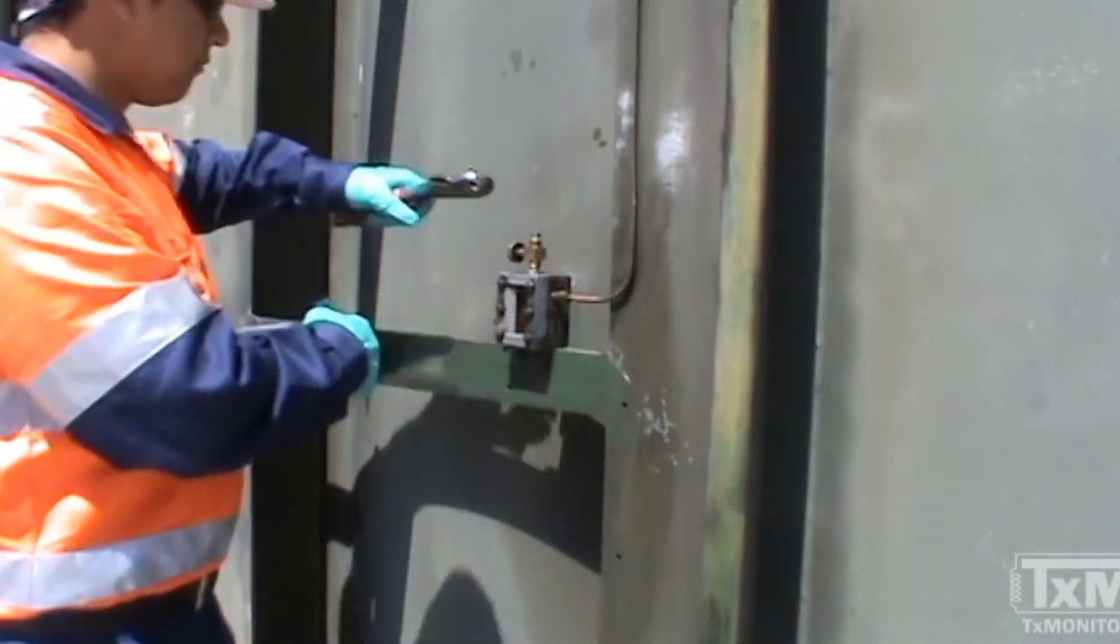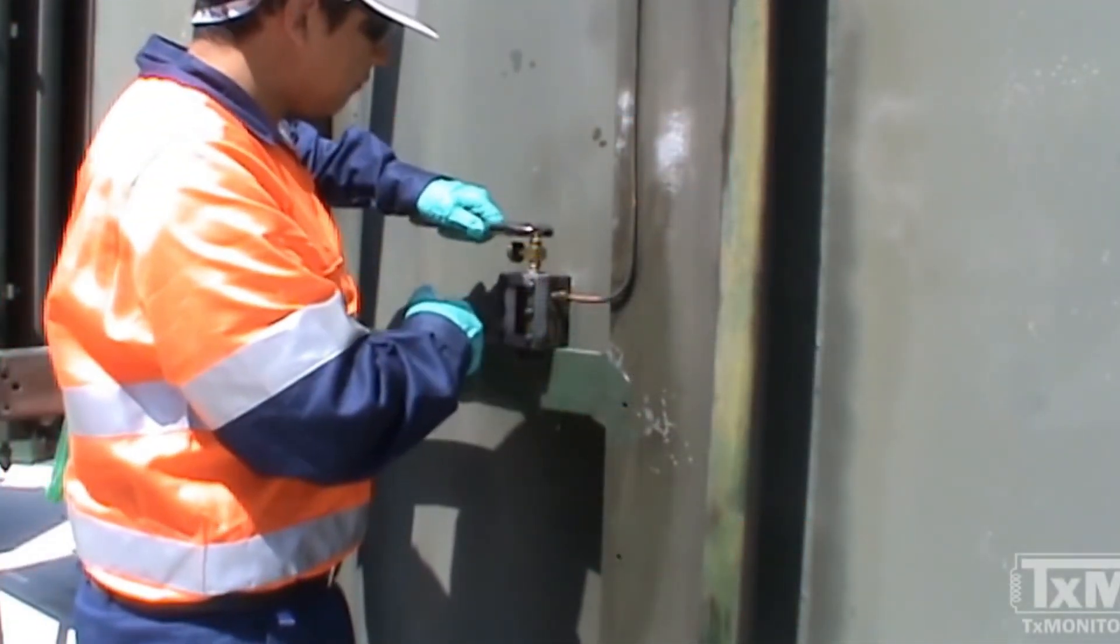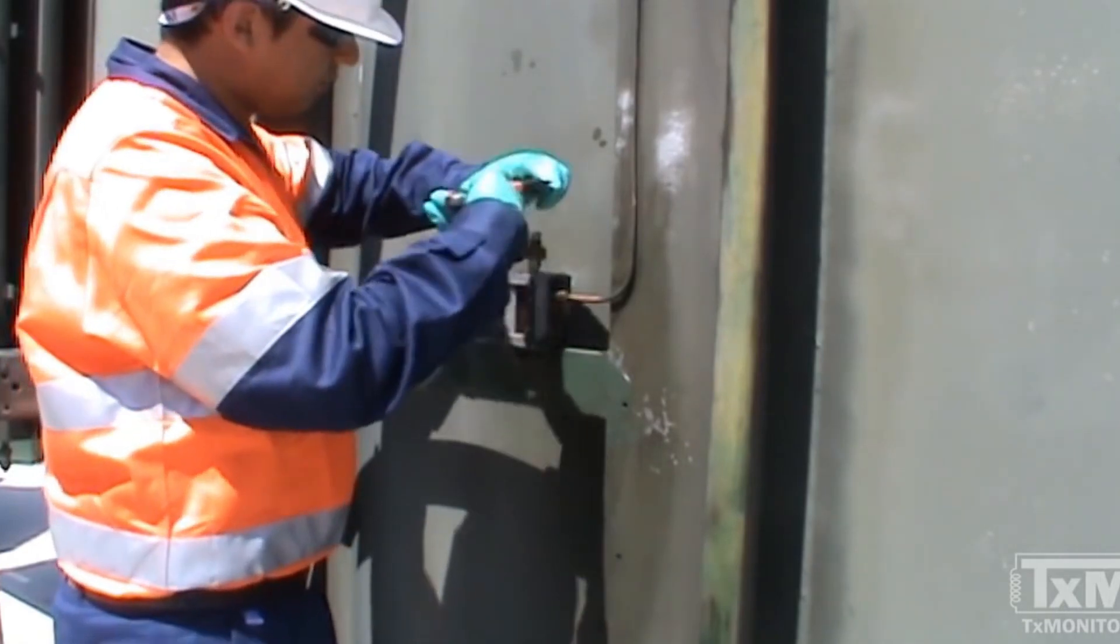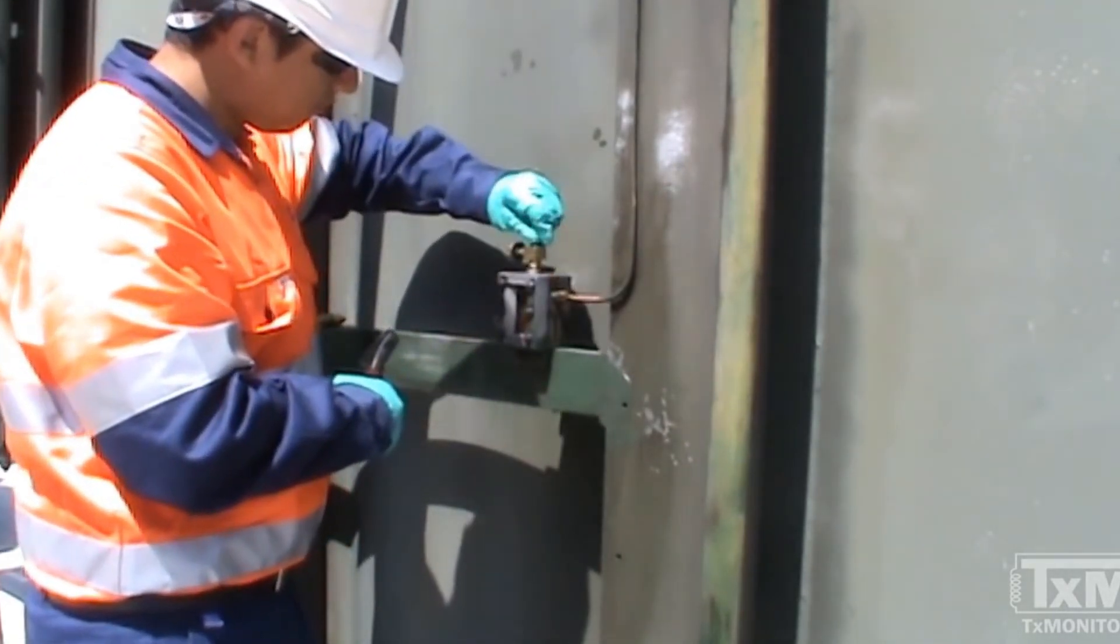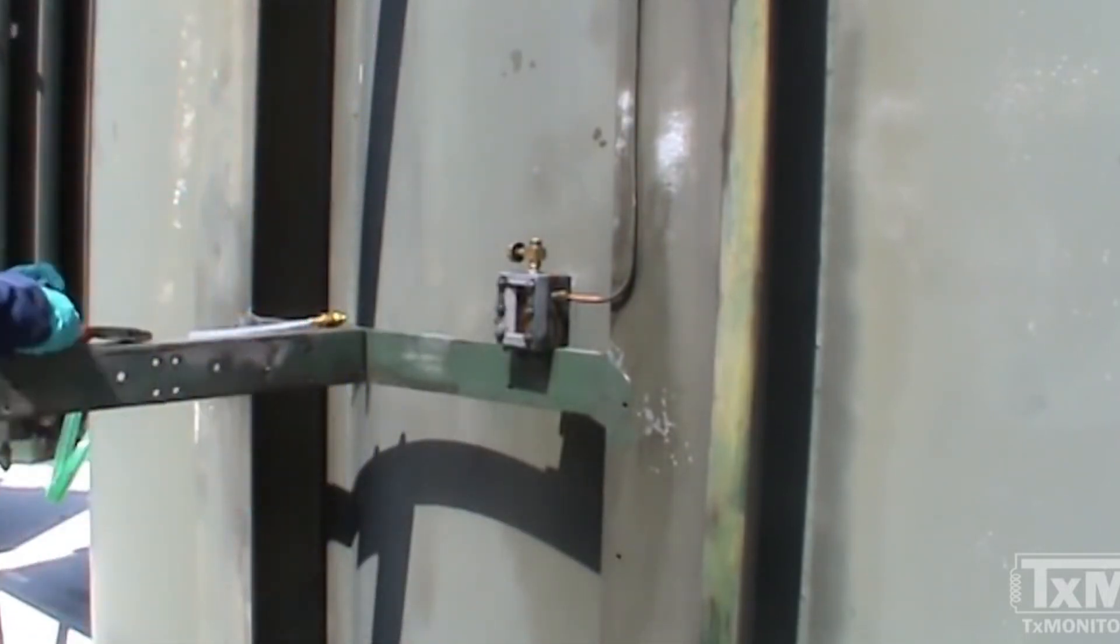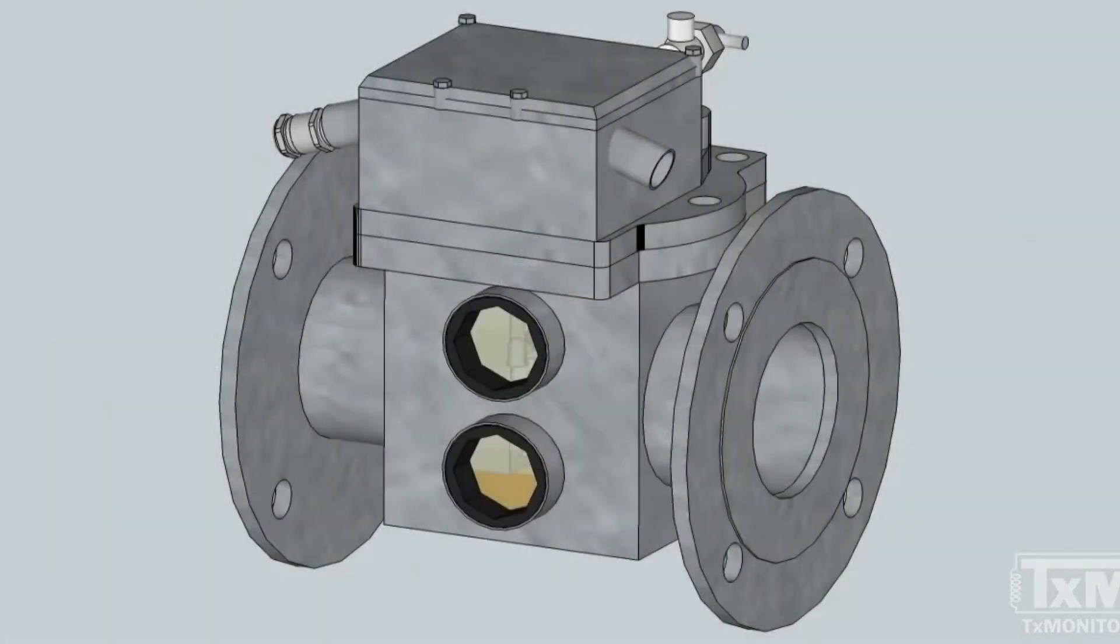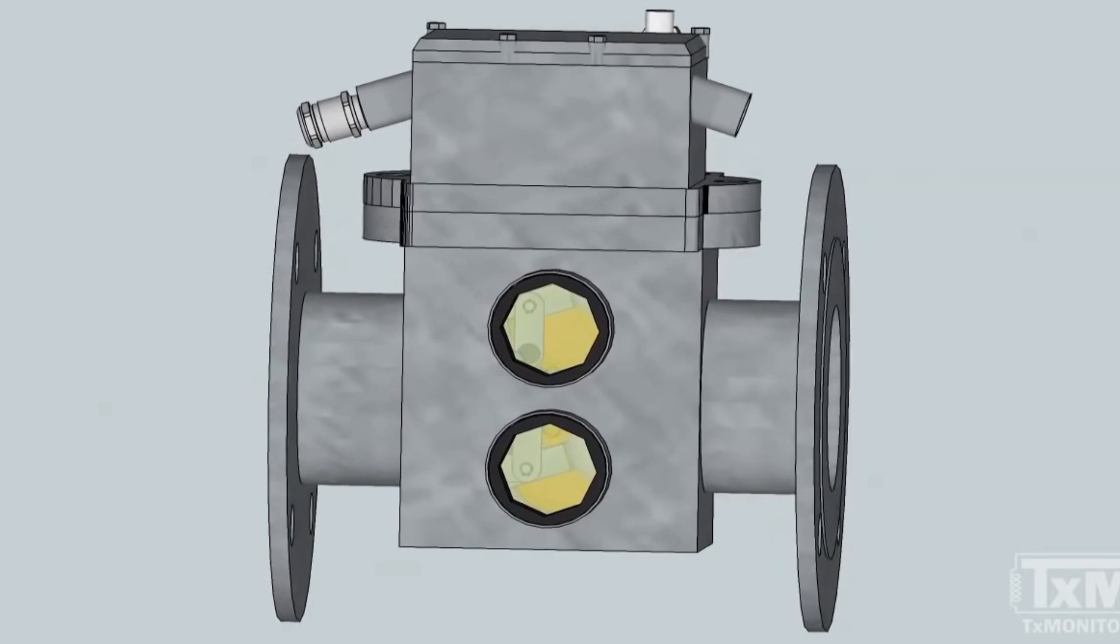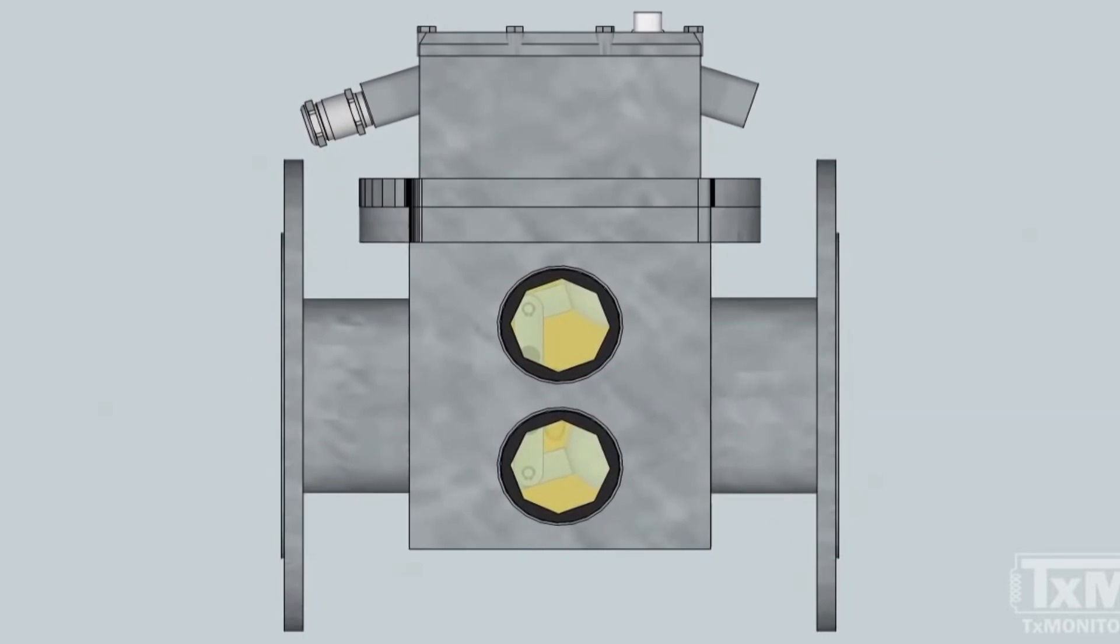The Buchholz samples can be taken from the gas sampling device accessible at ground level. If this gas sampling device is not available, the samples have to be taken directly from the Buchholz and therefore cannot be taken while the unit is energized.